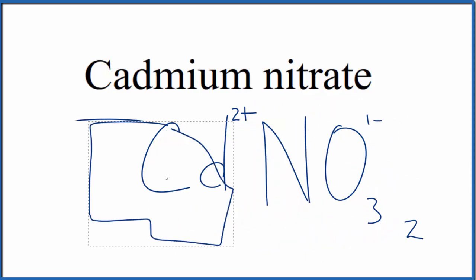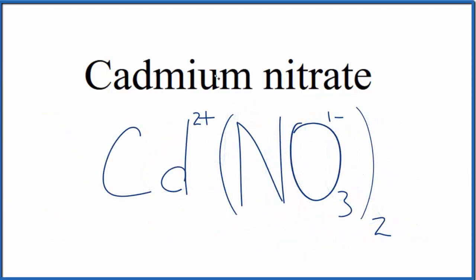Let's replace this with parentheses. And the formula for cadmium nitrate is Cd(NO3)2. Let's remove these symbols. And we have our formula.